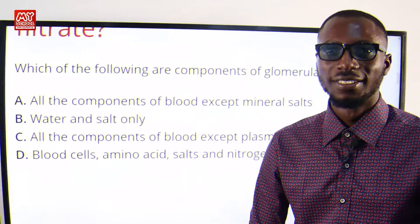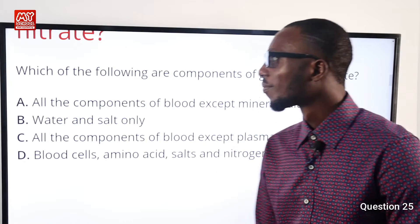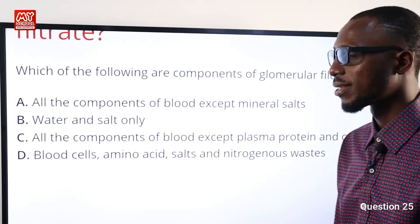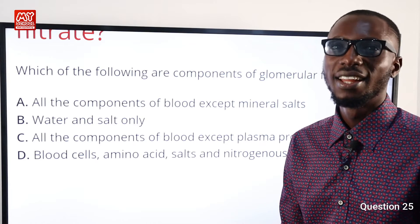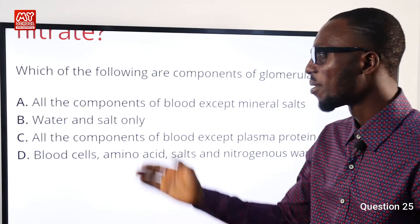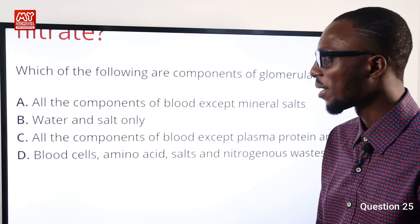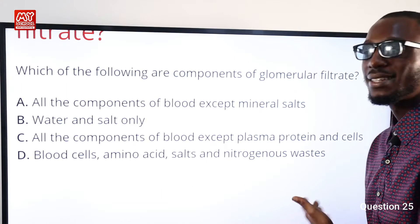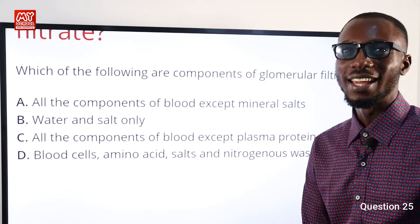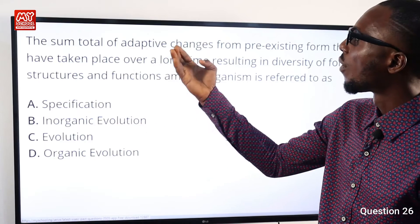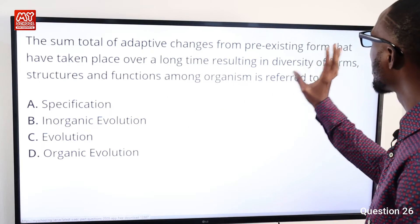Question 25: Which of the following are components of glomerular filtrate? It contains water, salt, urea, glucose, and so on. Option C correctly describes the answer — all components of the blood except plasma protein and cells. So option C is very correct.